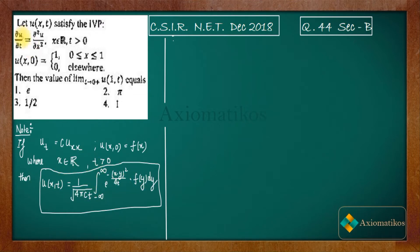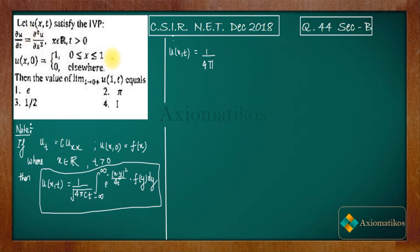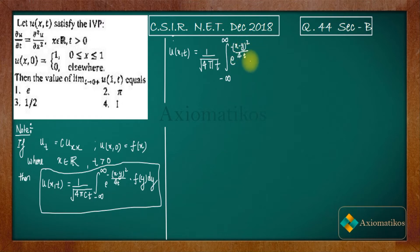Now let us begin with what we are given. For this system, according to the formula, we get u(x,t) equal to 1 over √(4πt) — since c equals 1 in our case — multiplied by the integral from minus infinity to infinity of e^(−(x−y)²/4t) times f(y) dy. Here f is the given initial condition, which is defined separately on [0,1] and zero otherwise. So I will break the integral.